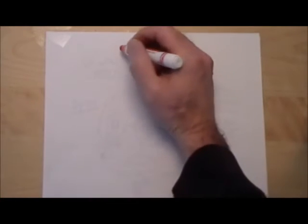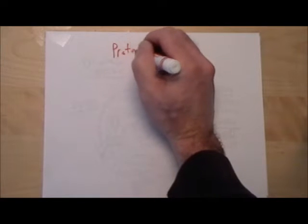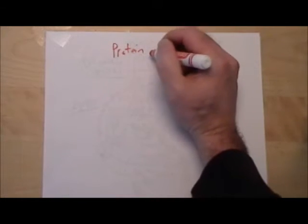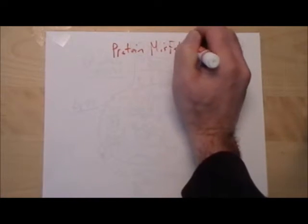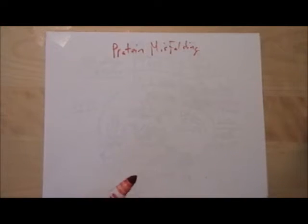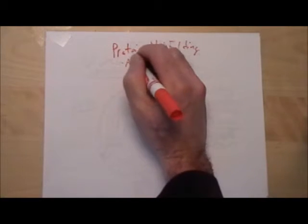So we're going back to our original markers. Protein misfolding. That is a very, very common pathway in a lot of neurodegenerative diseases. Almost every neurodegenerative disease that we talk about has a misfolded protein associated with it.